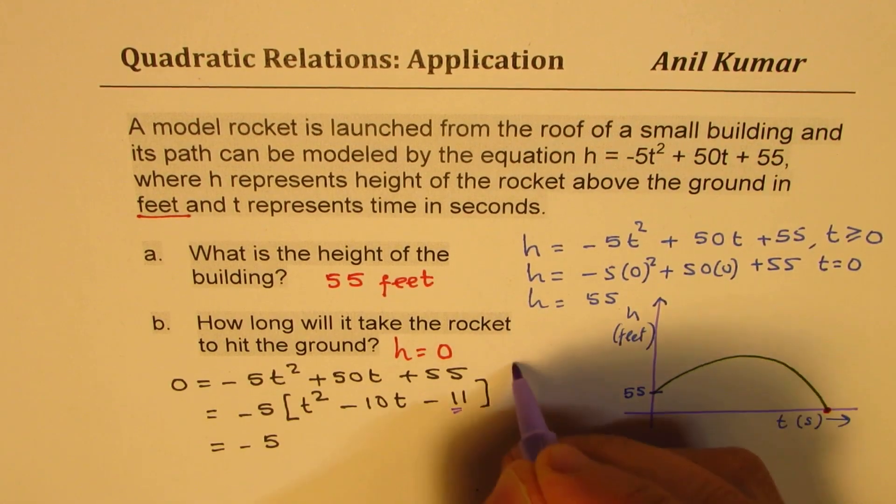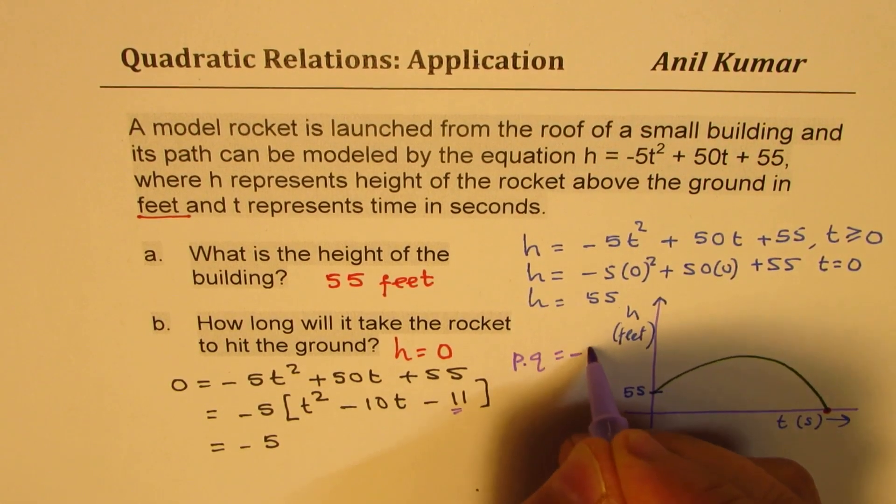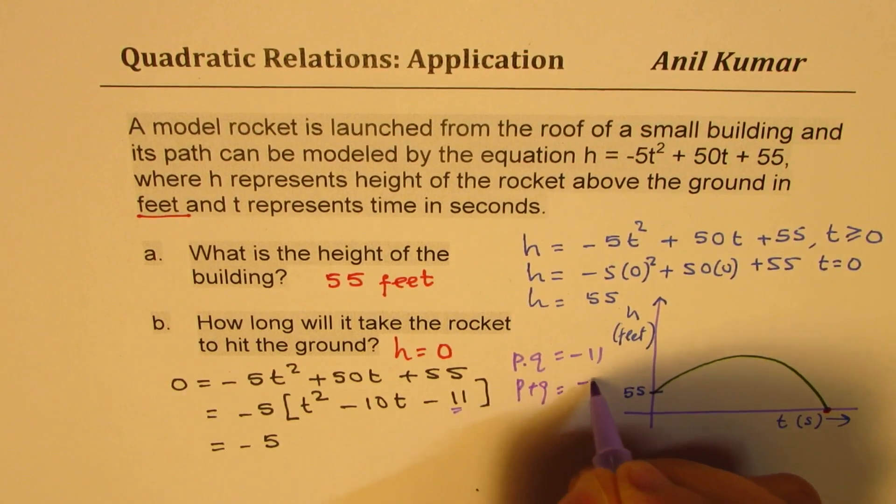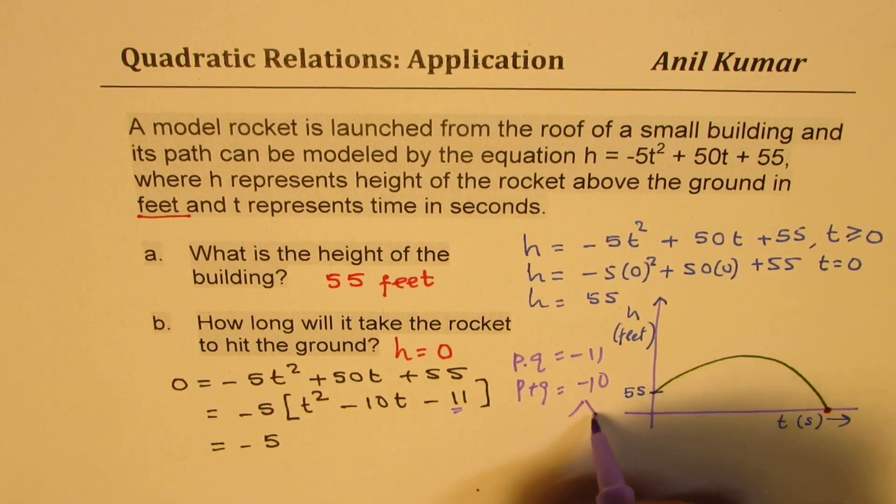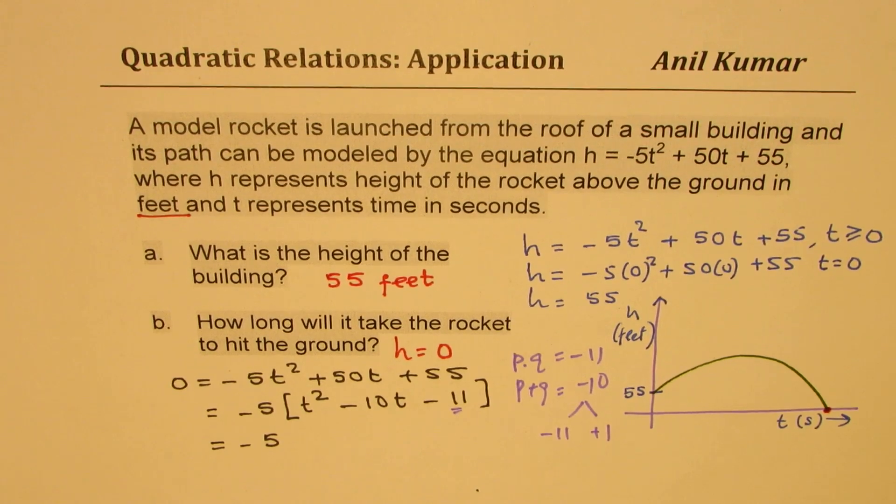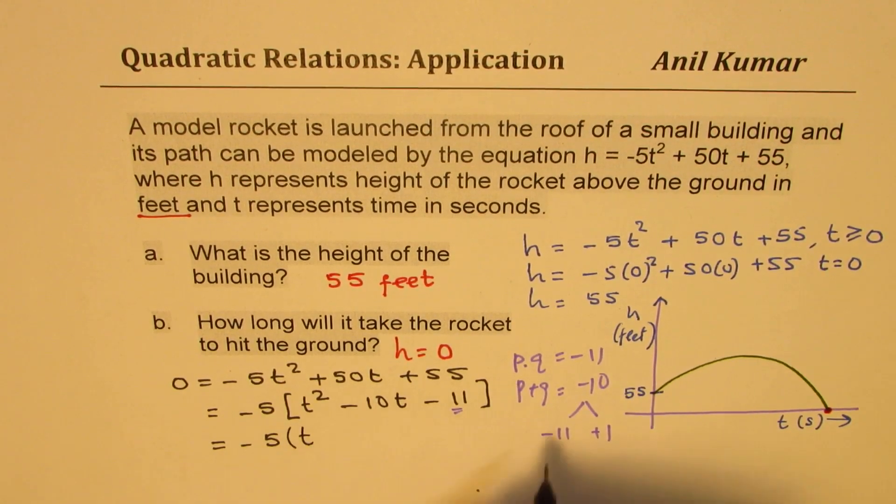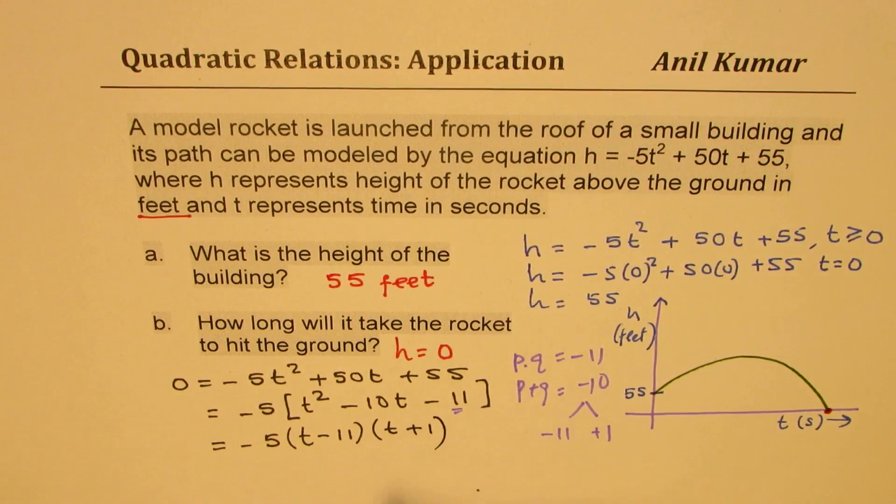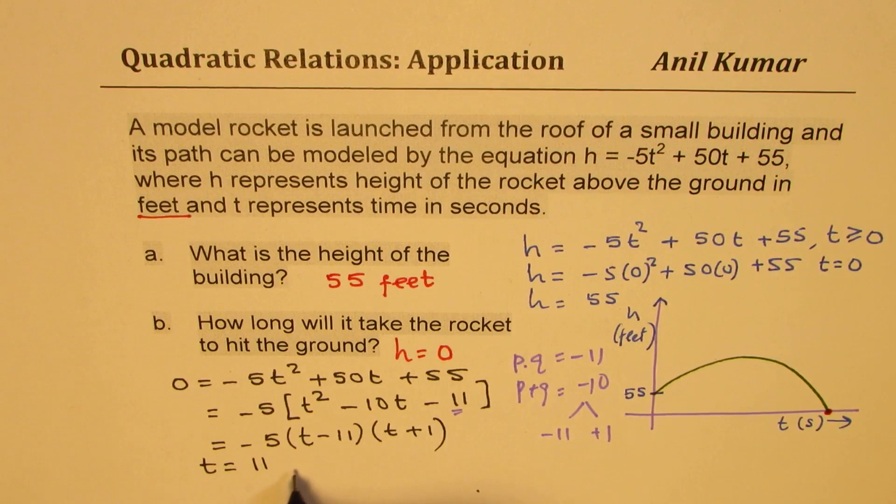We are looking for a product of two numbers to be minus 11 and sum of these two numbers as minus 10. So the two numbers should be minus 11 and plus 1. That gives you the factored form. We get T minus 11 times T plus 1. So the two valid answers are T equals 11 and T equals minus 1.